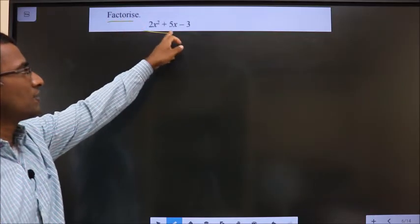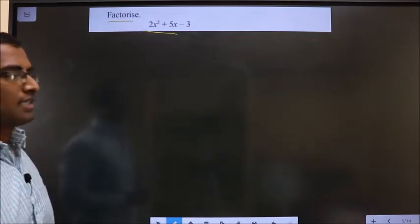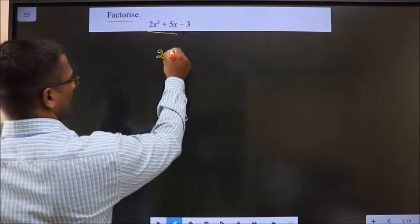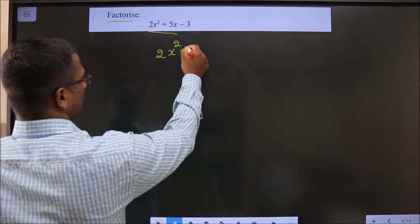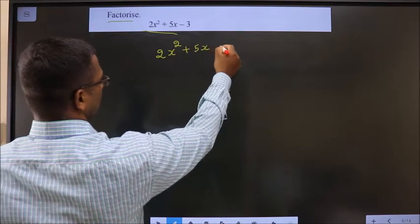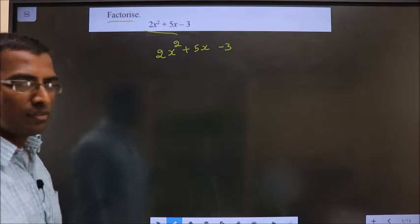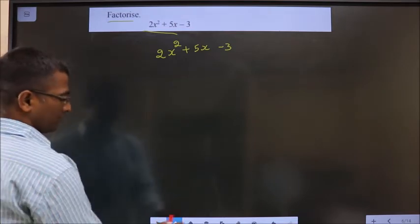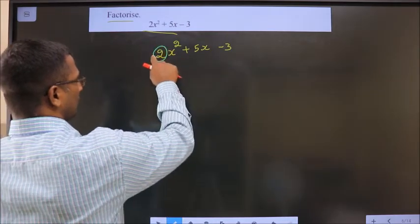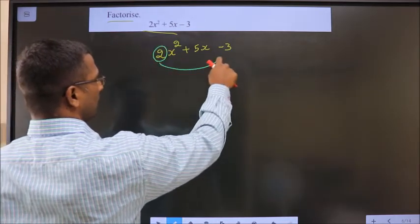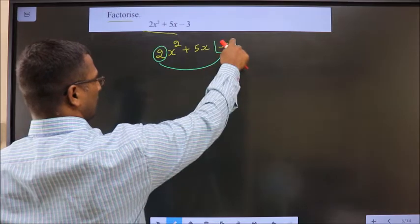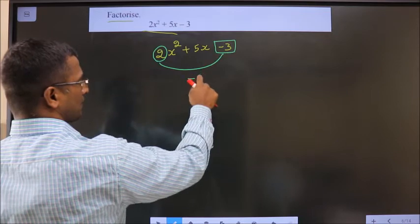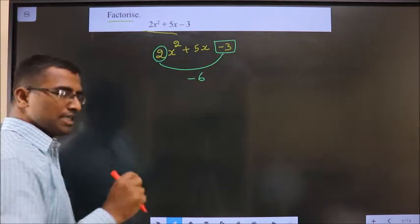Factorize 2x square plus 5x minus 3. Given equation is 2x square plus 5x minus 3. Now, how do we factorize this in step 1? Whatever you have here should be multiplied with the constant, that is minus 3 in this case. So, 2 into minus 3 is minus 6.